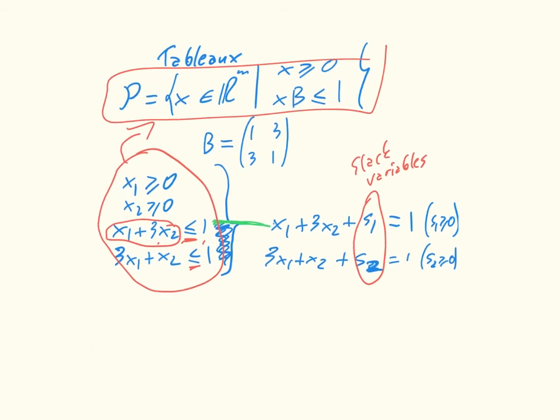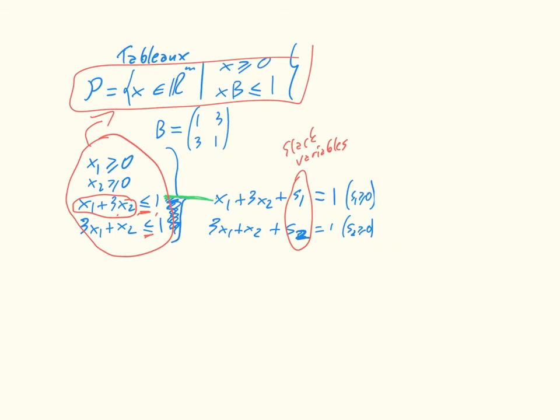What we can say is simply that for x1, x2, s1, and s2 greater or equal to 0, we simply want that x1 plus 3x2 plus s1 equals 1, and 3x1 plus x2 plus s2 is equal to 1. I'm just kind of leaving the gap here because what we're going to be interested in actually is in the coefficients of these various columns.